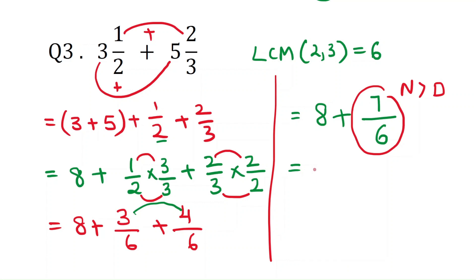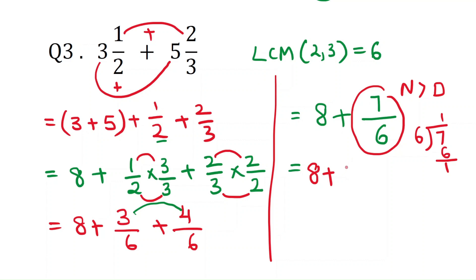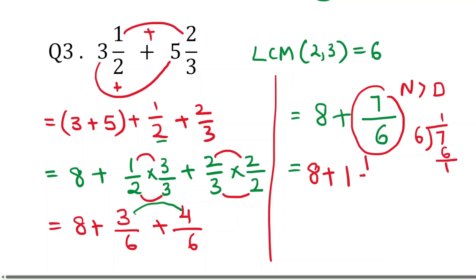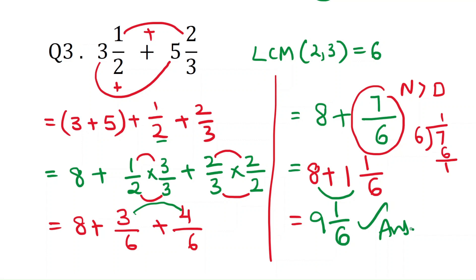We need to convert 7/6 to a proper form. Divide 7 by 6: the quotient is 1 and the remainder is 1, so 7/6 equals 1 and 1/6. Now add the whole numbers: 8 plus 1 is 9. The final answer is 9 and 1/6. Thank you for watching — if you like the video please like, share, and subscribe for more videos.